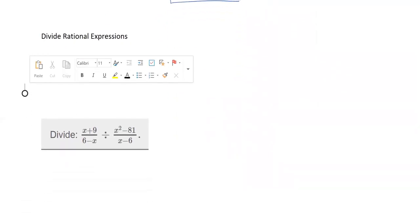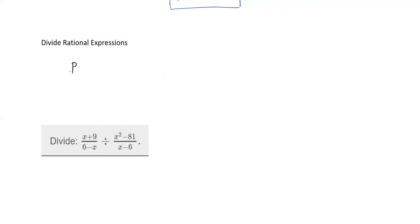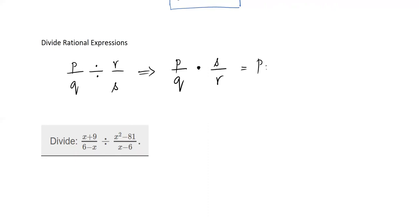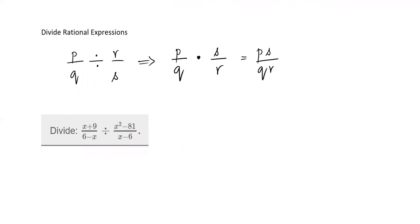Now let's talk about dividing rational expressions. For P over Q divided by R over S, the rule is: keep the first fraction as it is, change the division to multiplication, and flip the second fraction — so R over S becomes S over R. This turns the division problem into a multiplication problem: PS over QR. The rule hasn't changed from numbers; we just add the extra step of factorizing to cross-cancel.